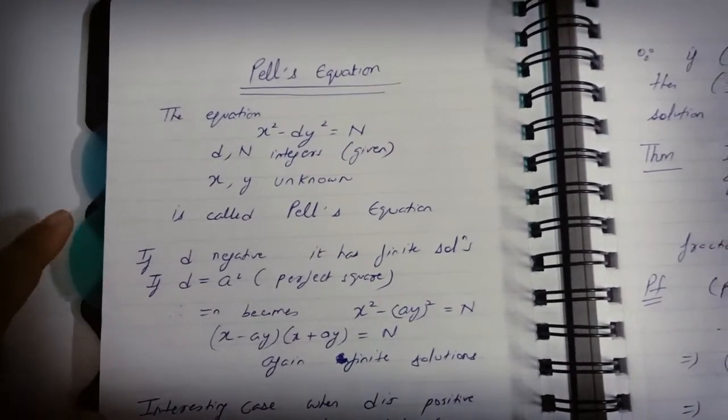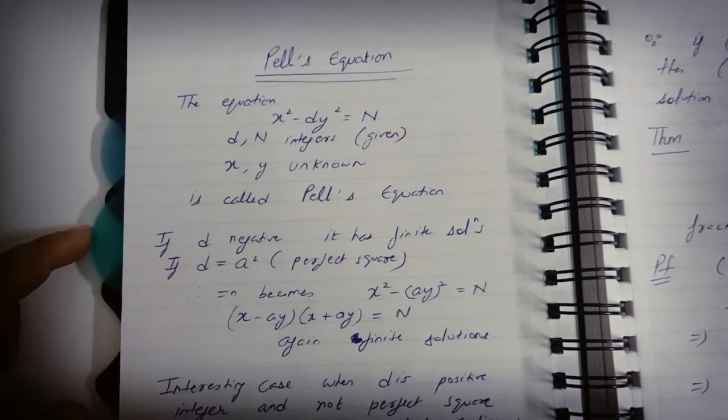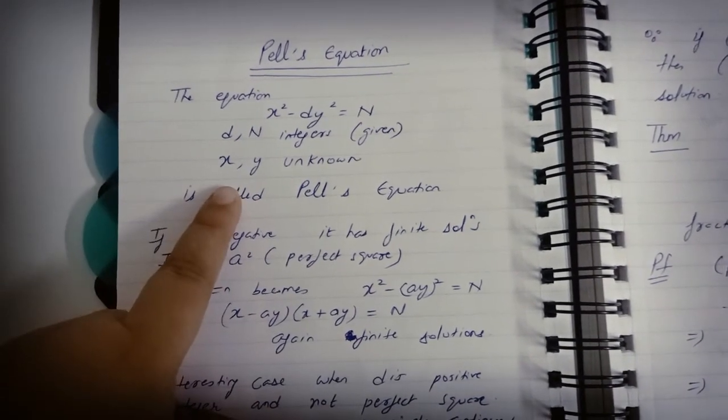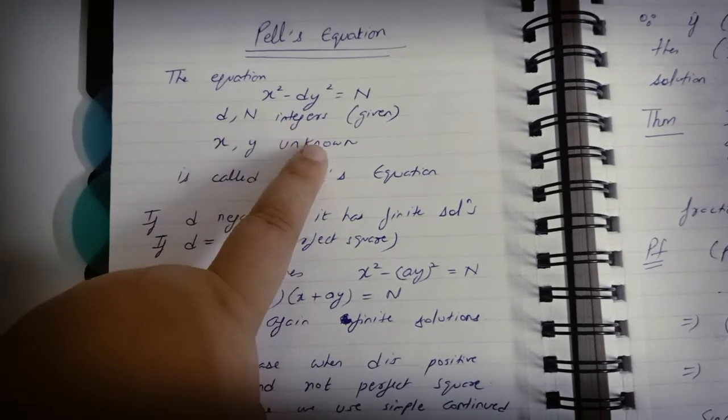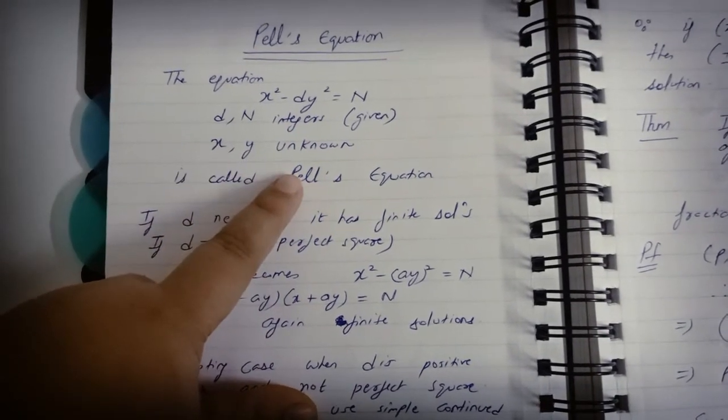Good evening students, the next topic I want to discuss is Pell's equation. The equation of the type x² - dy² = n, where d and n are given integers and x, y are unknown, is called a Pell's equation.